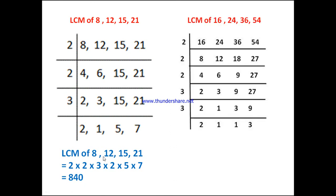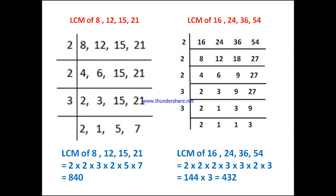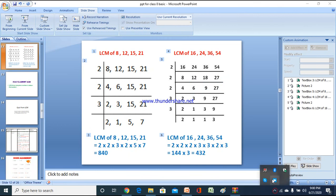For the next question as well, we stop when the last row shows prime numbers 2 and 3, each appearing only once. The product of prime factors 2 × 2 × 2 × 3 × 3 × 3 × 2 × 3 gives 432. So like this we can find the LCM of many numbers by short division method.